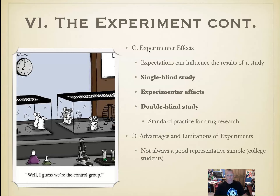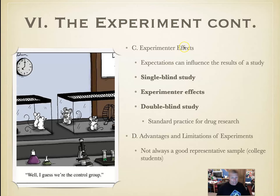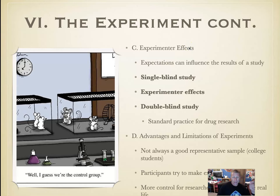It's not always a good representative sample — most subjects in psychological experiments are college students, who can make money by participating. Participants also tend to want the experiments to work. And while there's more control for the researcher, it means the setting is less like real life — a lab setting isn't the same as the real world.